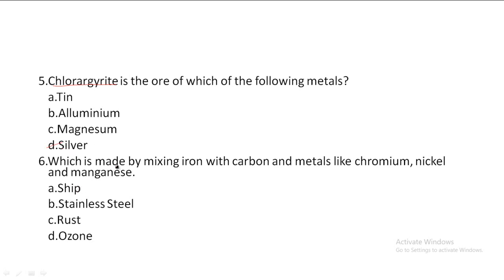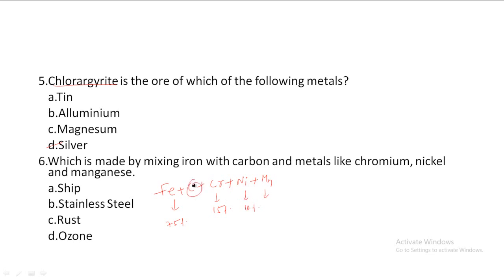Next one: Which is made by mixing iron with carbon and metals like chromium, nickel and manganese? Option A: Ship, Option B: Stainless steel, Option C: Rust, Option D: Ozone. So, iron plus carbon plus chromium plus nickel plus manganese — this material is stainless steel. Iron is 75%, chromium is 15%, and manganese plus carbon make up the remainder. Stainless steel is used in doctors' surgical instruments. Option B, stainless steel, is the correct answer.